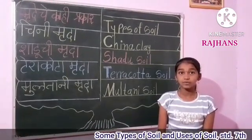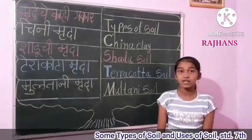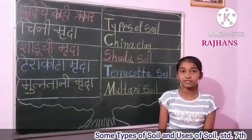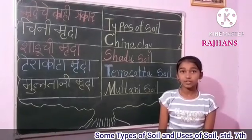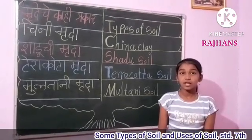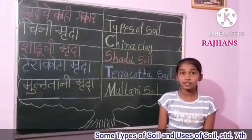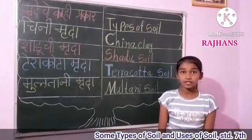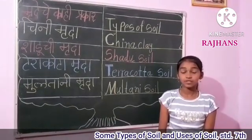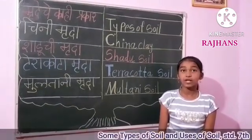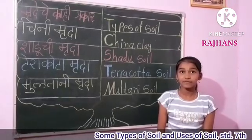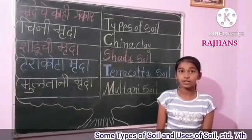Terracotta soil is red in color. Decorative articles and pots used for growing plants are made from this soil.